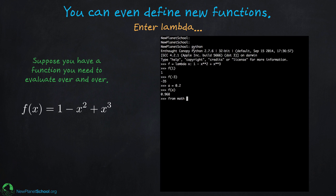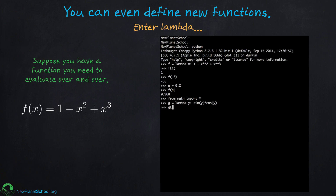Now let's pull in math to show how you can combine these two things. I'll define a new function `g` in terms of variable `y` — just to show the variable name doesn't matter — using functions from math like sine times cosine. Then I can ask for different values of this new function `g`.